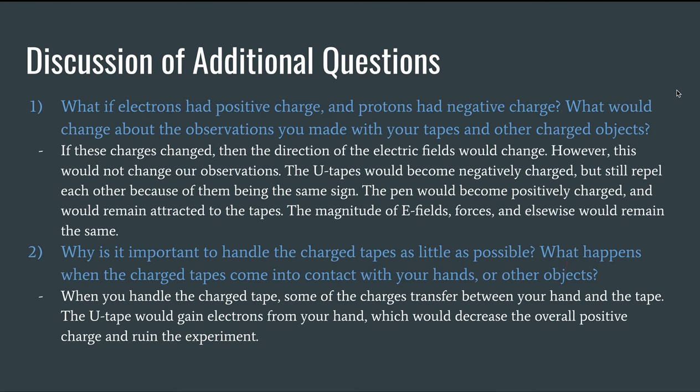Getting into the additional questions here. Basically, what would happen if electrons were positive and protons were negative? Well, if these charges changed, then the direction of the electric fields would change.